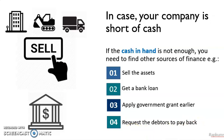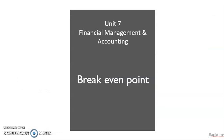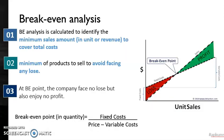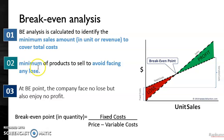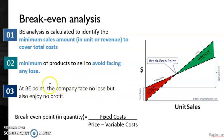Next, I will look at the break-even point. The break-even point is calculated by break-even analysis. Break-even analysis is calculated to identify the minimum sales amount in units or revenue to cover the total cost, and also to find the minimum number of products to sell to avoid facing any loss. At the break-even point, the company faces no loss but also enjoys no profit.